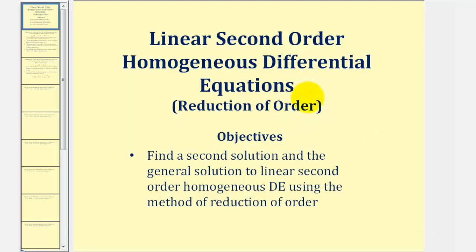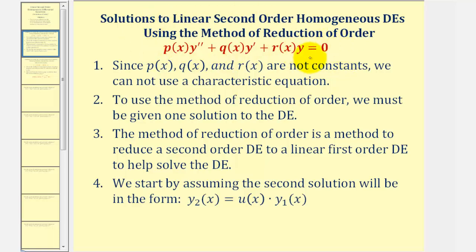Welcome to part two of using the method of reduction of order to find a second solution and the general solution to a linear second order homogeneous differential equation. Our second order differential equation must be in a specific form, and because p of x, q of x, and r of x will not be constants, we cannot use a characteristic equation, but we can use the method of reduction of order if we're given one solution. This technique reduces a second order differential equation to a linear first order differential equation, which we can then solve using separation of variables or an integrating factor.